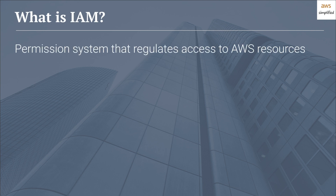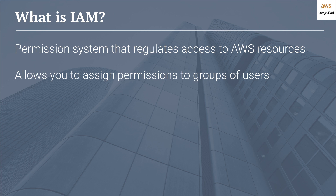As the name implies, IAM is a permission system that regulates access to AWS resources. It helps you as the administrator define who can access what on an AWS account. IAM users allow you to assign broad or specific permissions to groups of users or even specific individuals. Broad permissions could include providing access to an entire AWS service such as DynamoDB, whereas specific permissions could include fine-grained access to a particular S3 bucket to perform read and write operations.